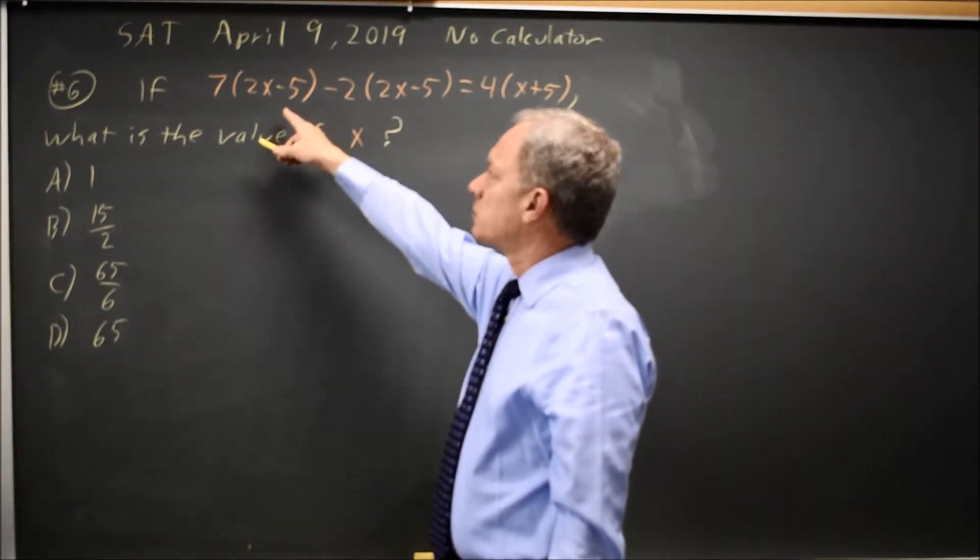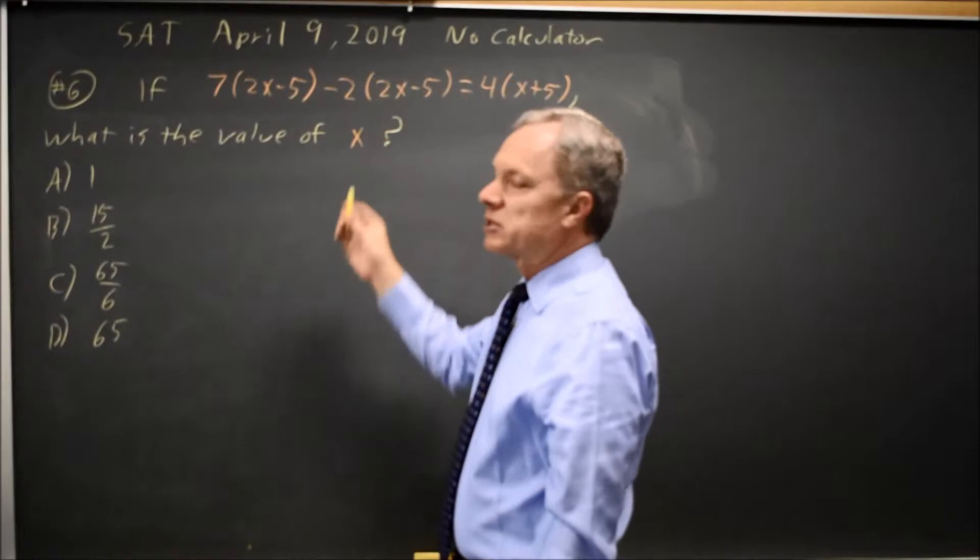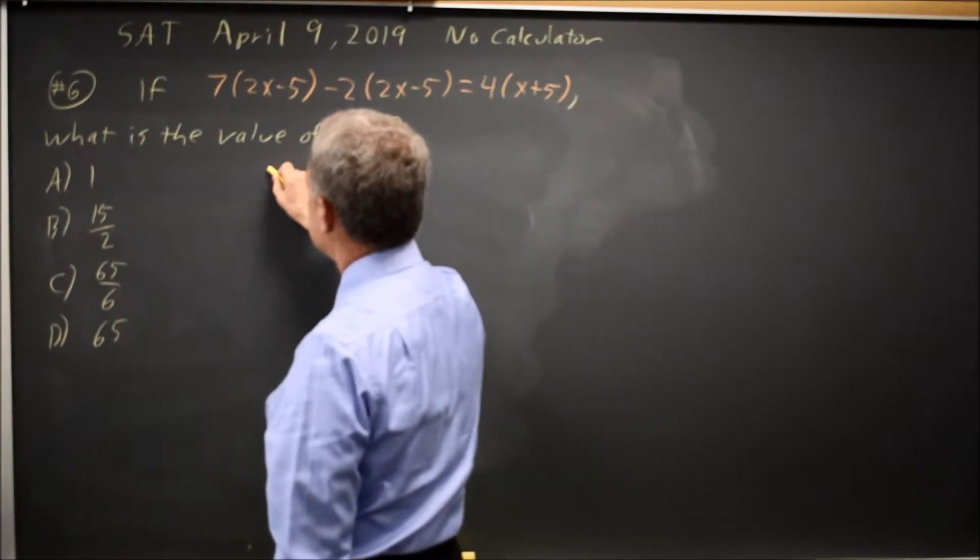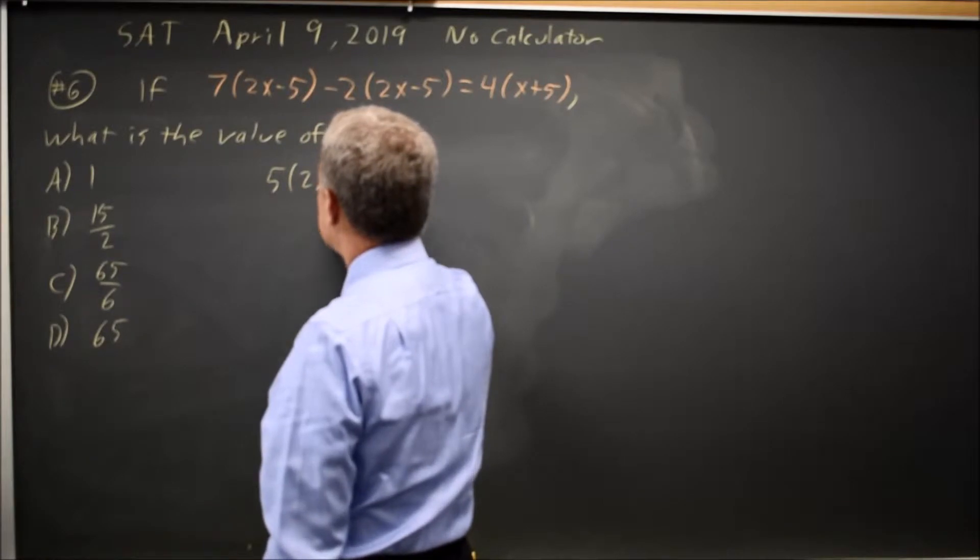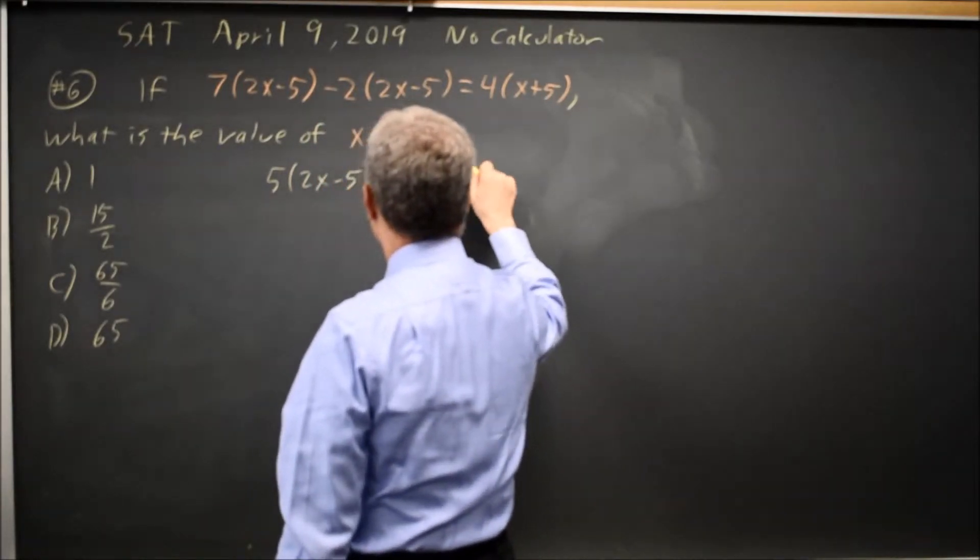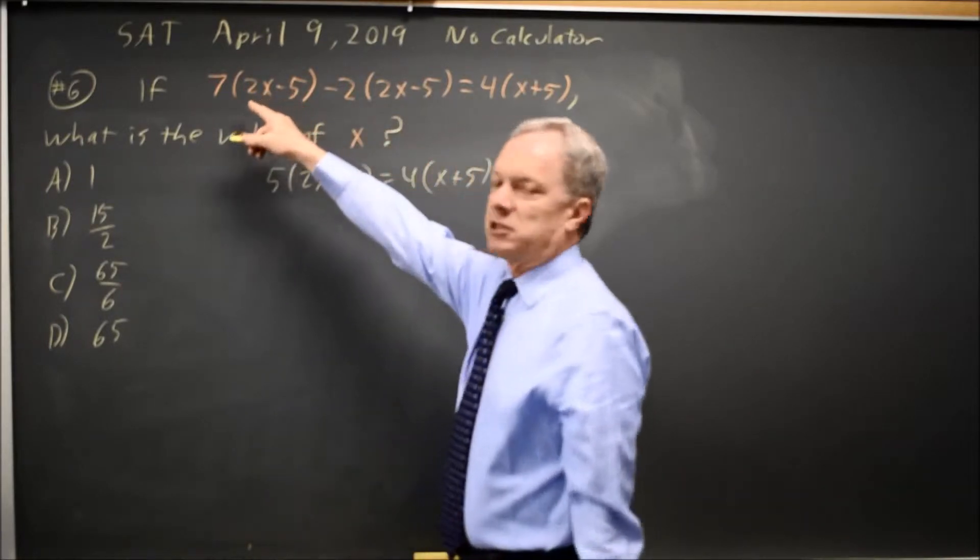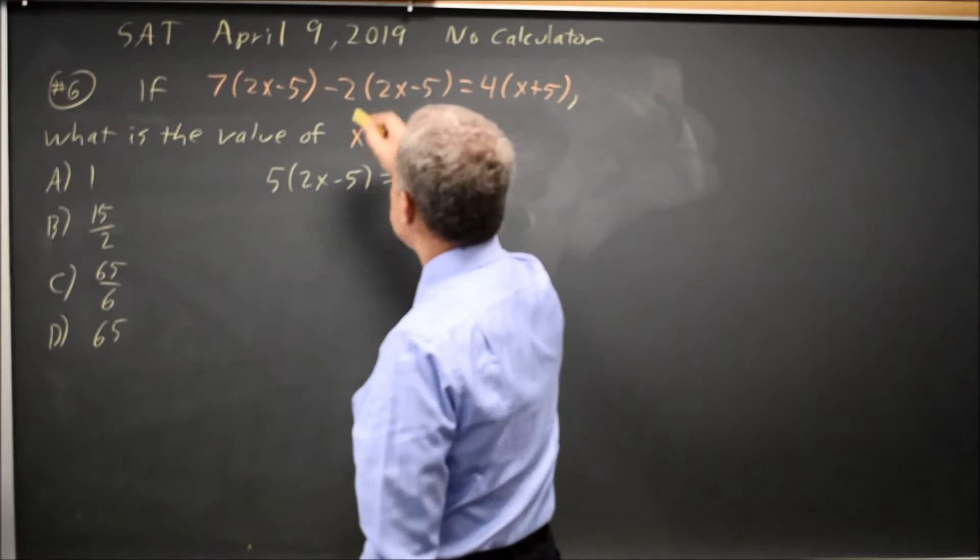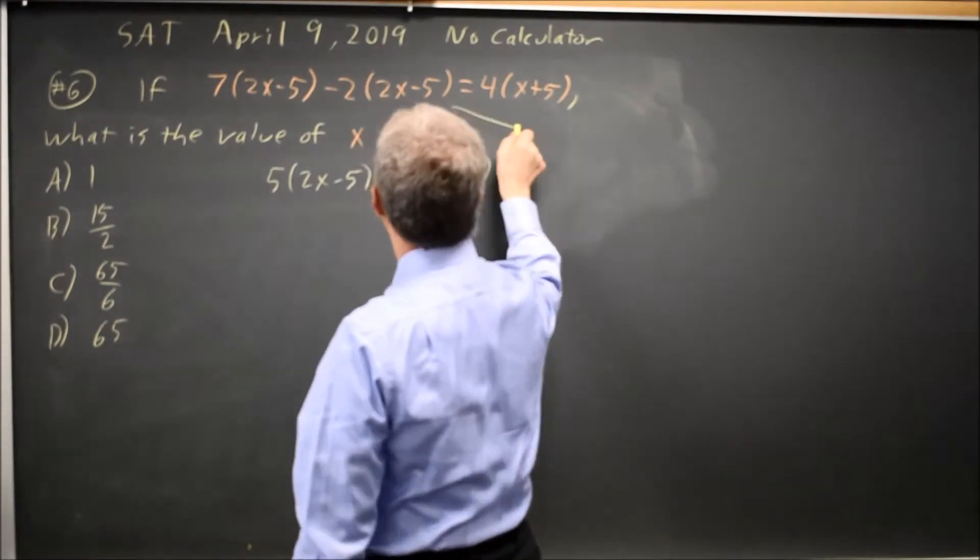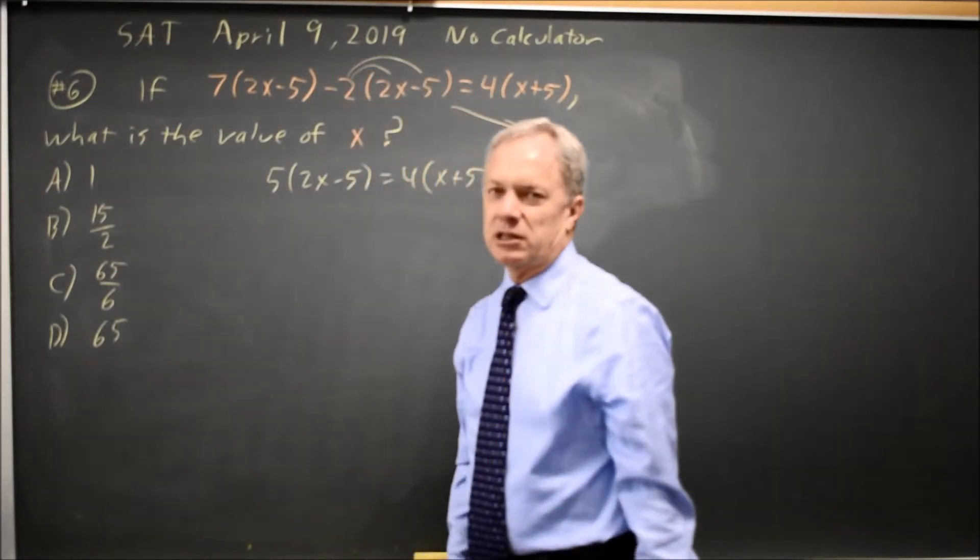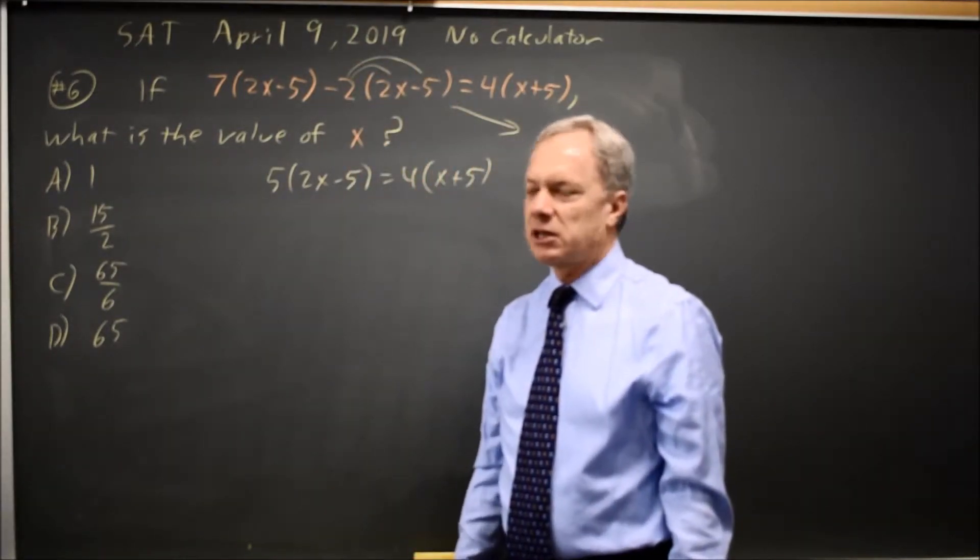We have 7 times 2x minus 5 minus 2 times 2x minus 5, and they're the same quantity, so 7 minus 2 is 5, 2x minus 5 equals 4x plus 5. If you don't spot that and just distribute the 7 and the negative 2, that also works, but you have to be careful distributing the negative 2, that you take the negative 2 to both terms inside the parentheses. We often drop that negative.